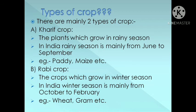Kharif crop: The plants which are grown in rainy season are called Kharif crops. In India, rainy season is mainly from June to September. The examples of Kharif crops are paddy, maize, etc.